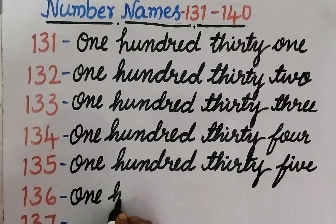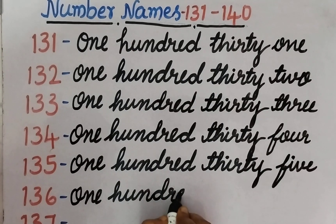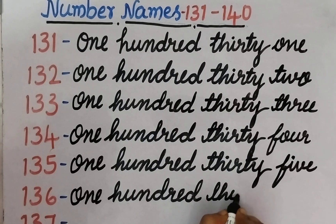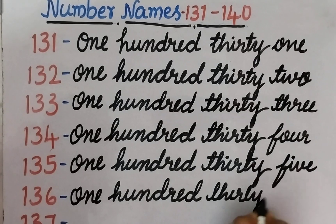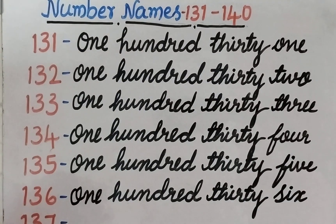E, H, U, N, D, R, E, D — 130. T, H, I, R, T, Y — 136. S, I, X — 6.